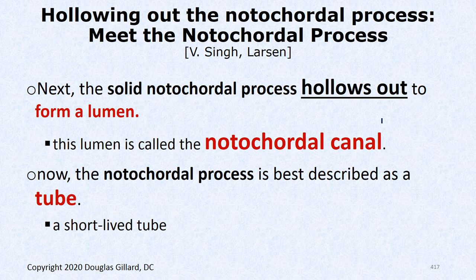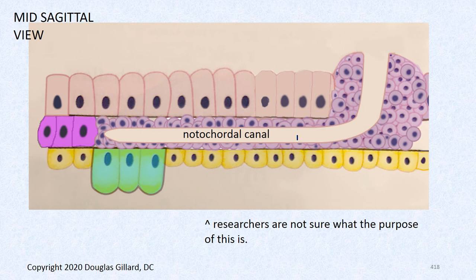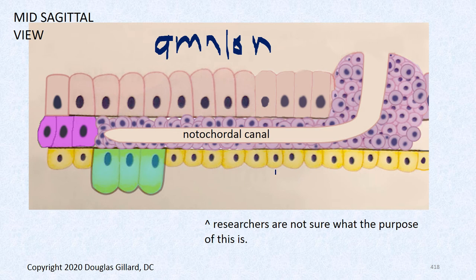Next we go through a hollowing-out phase — the notochordal canal. We have a solid nodal chordal process, and the next step is it becomes hollow. It's very short-lived. It creates a notochordal canal which connects to the primitive pit. Above is the amniotic cavity filled with amniotic fluid; below is the secondary yolk sac. The notochordal process then fuses with the endoderm underneath, and the bottom layer disappears as they fuse solidly together.